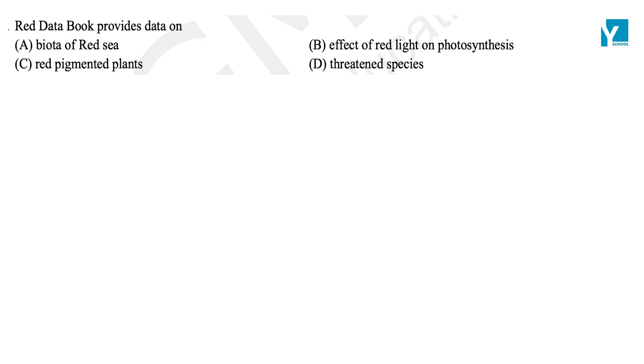The question is: Red Data Book provides data on (A) Biota of Red Sea, (B) Effect of Red Light on Photosynthesis, (C) Red Pigmented Plants, or (D) Threatened Species.